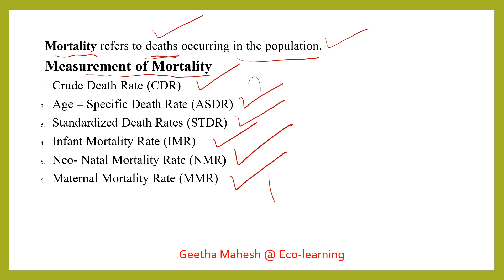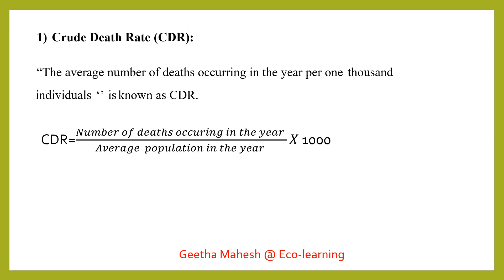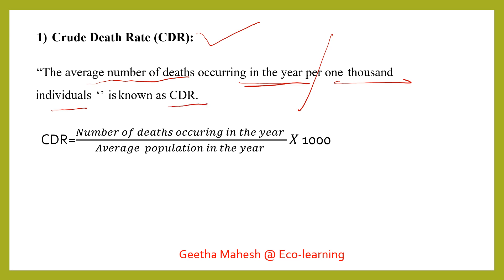In this video, we will be discussing crude death rate. Dear students, crude death rate — the average number of deaths occurring in a year per thousand individuals — is known as crude death rate.